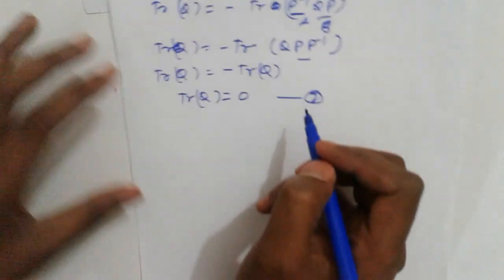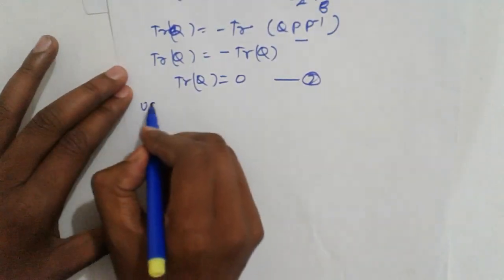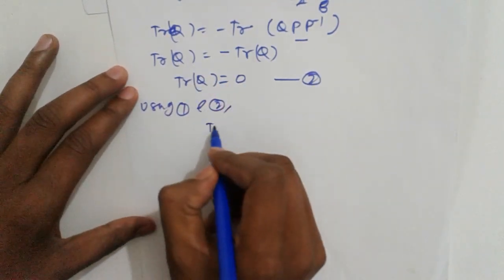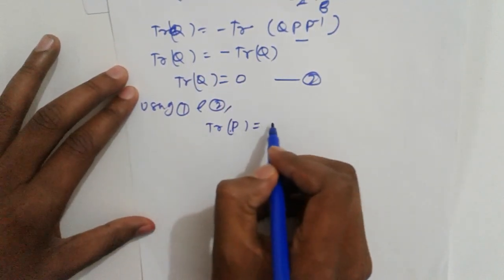So the conclusion here: using equations 1 and 2, trace of P equals trace of Q.